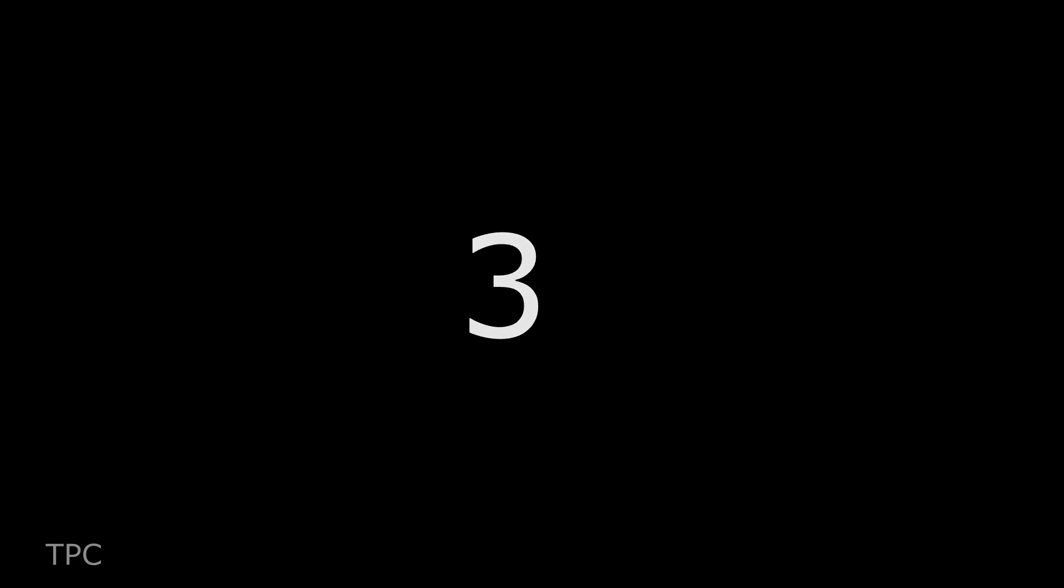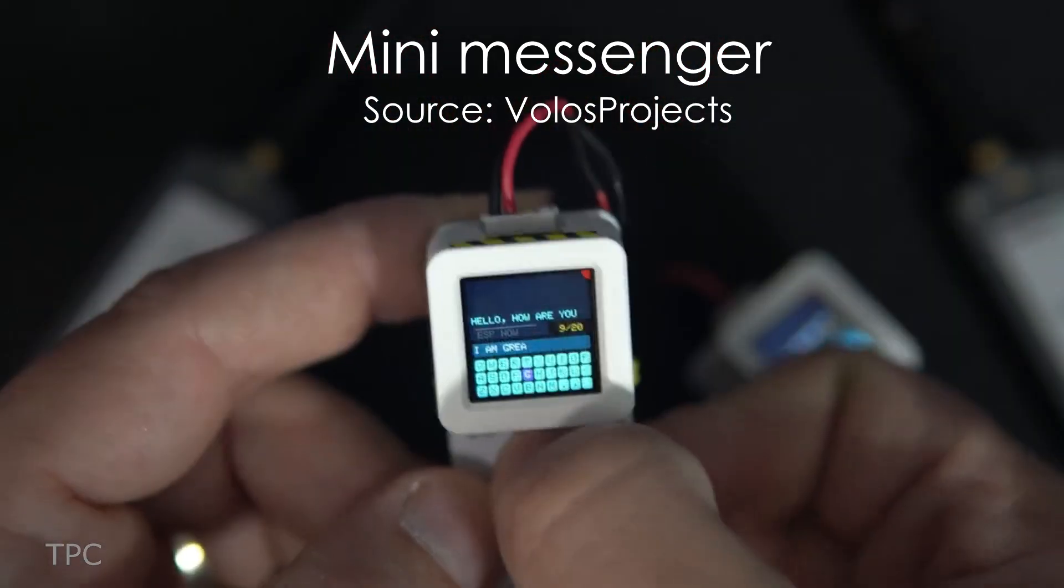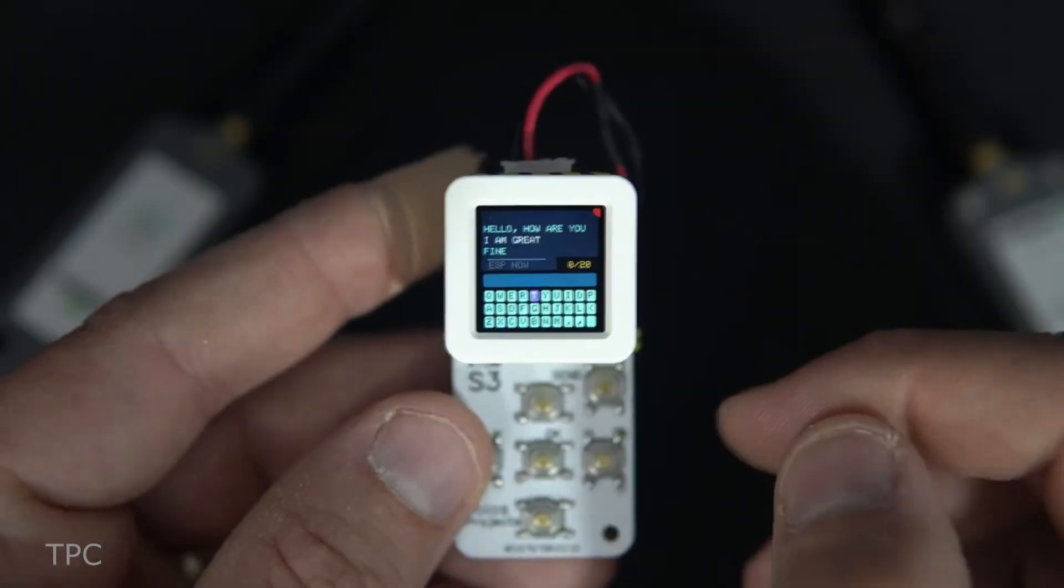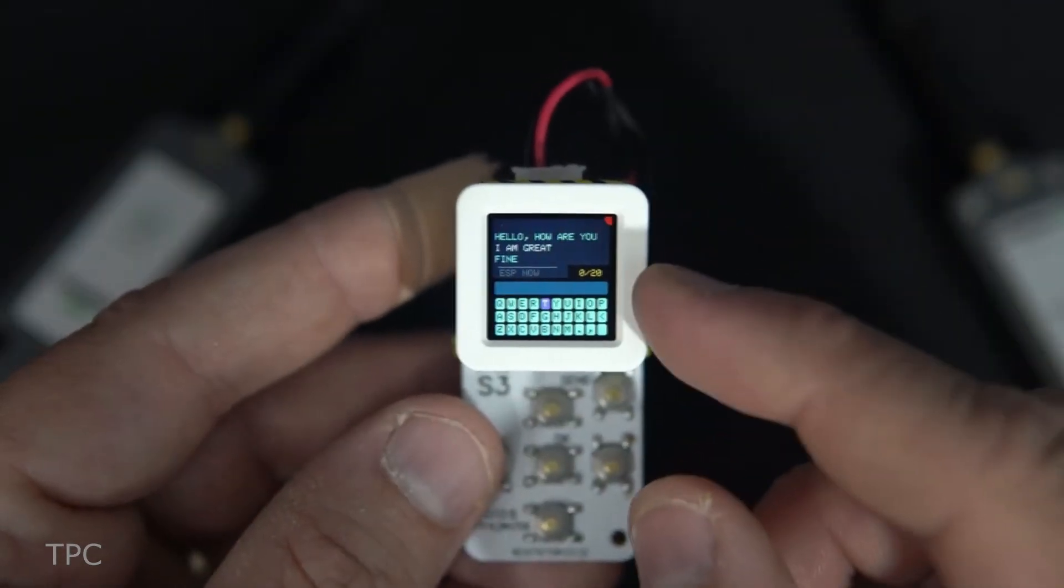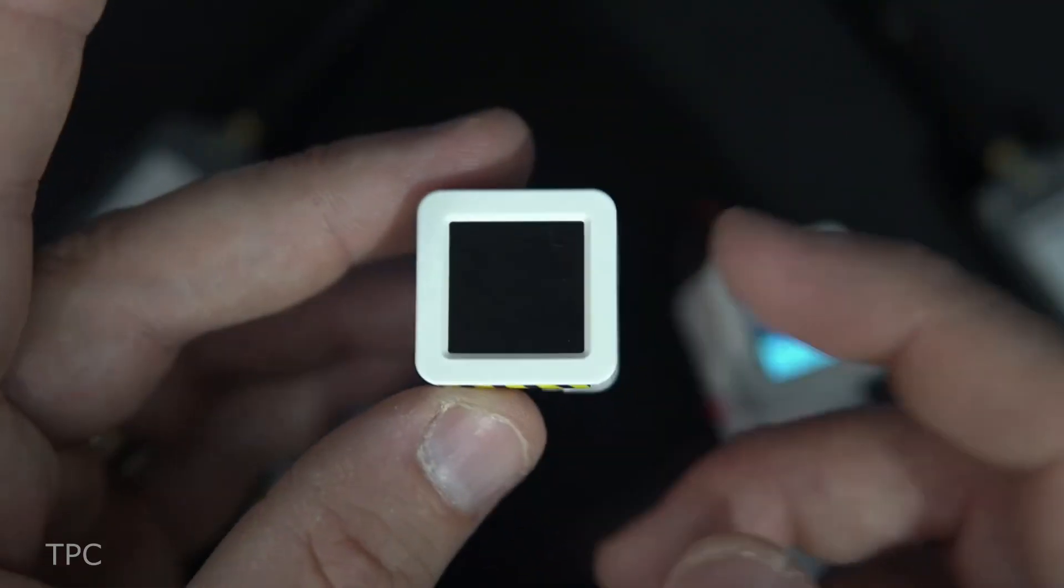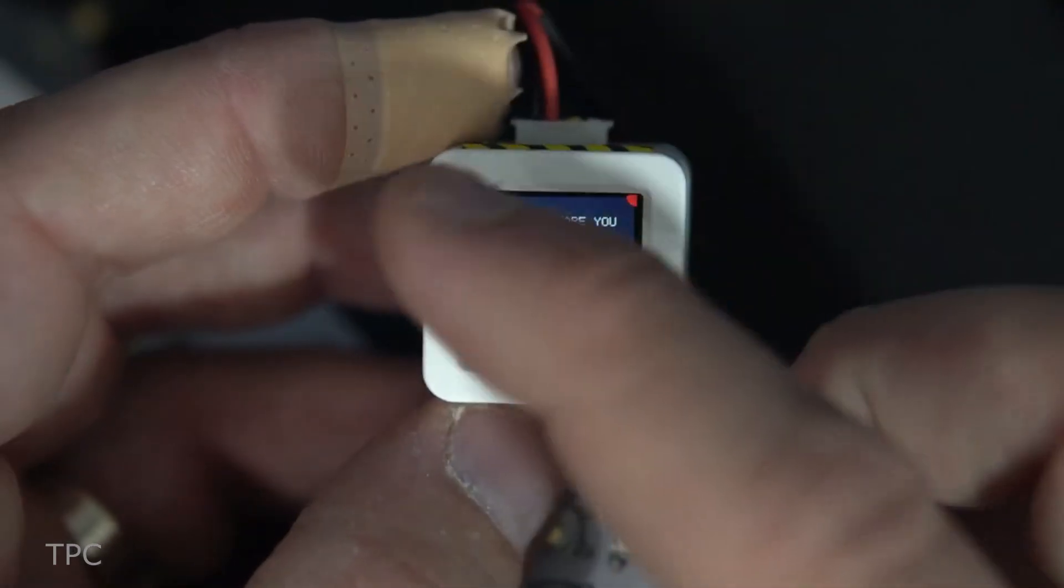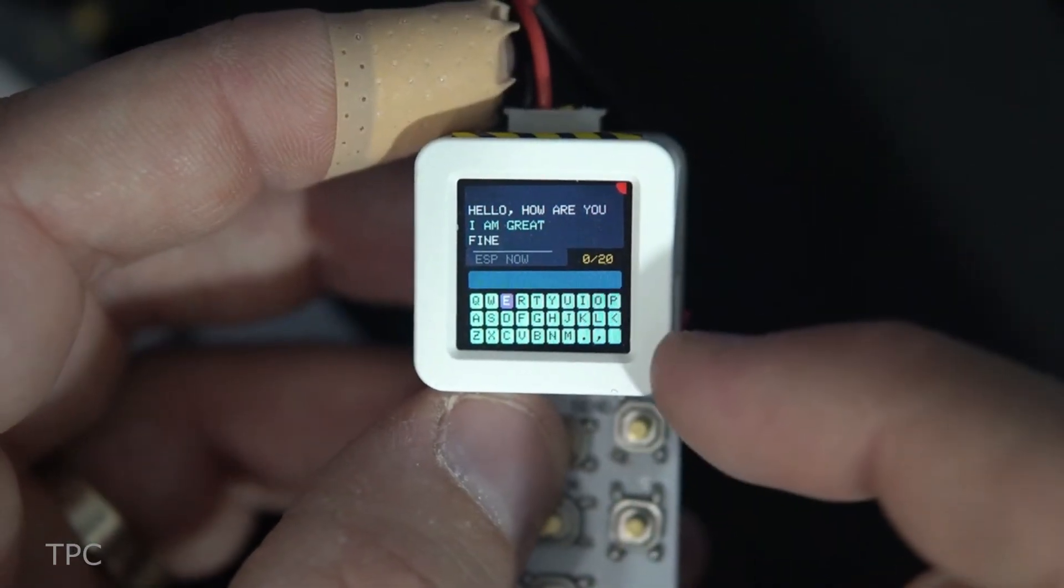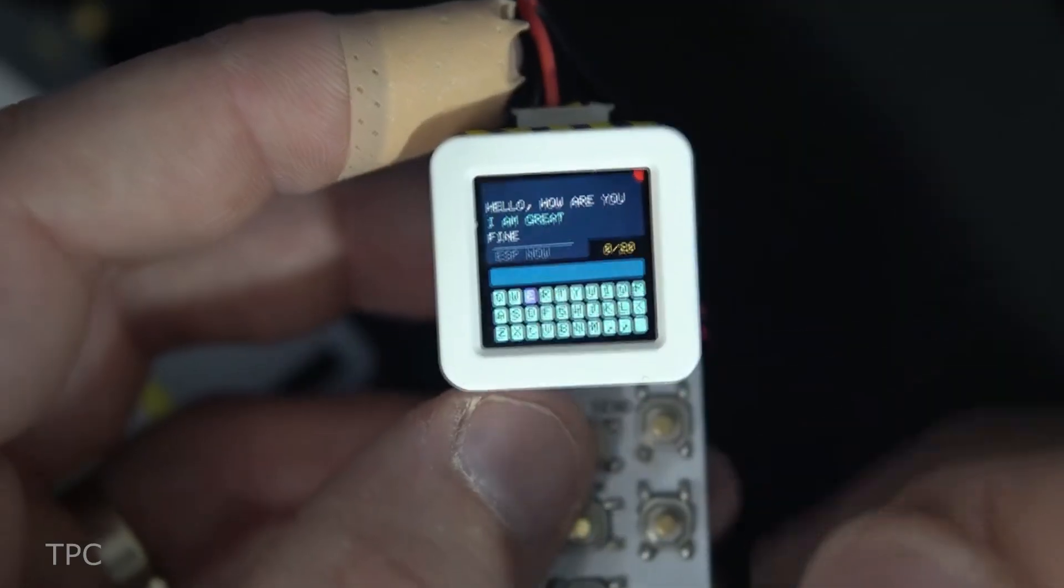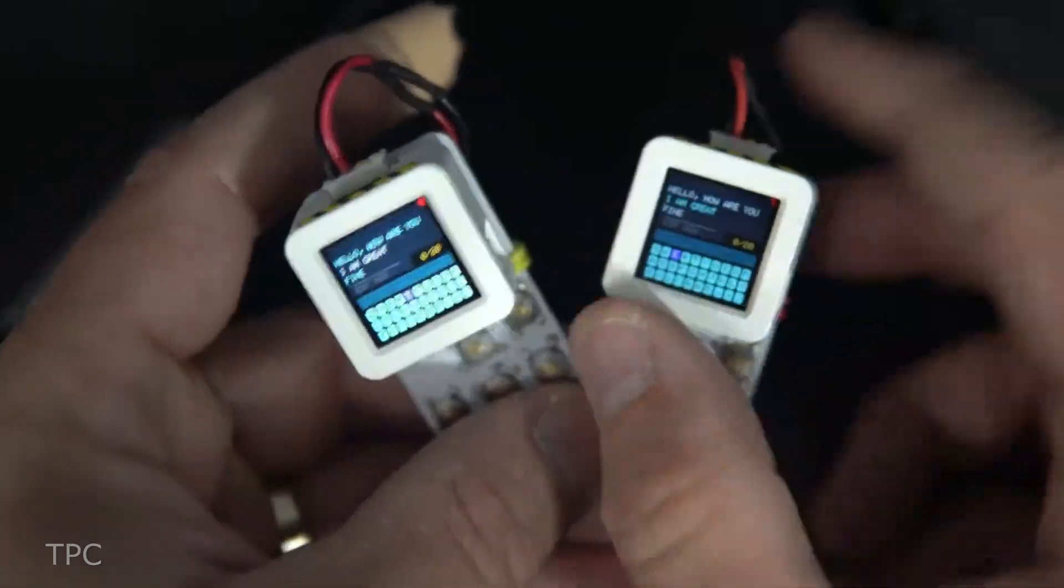Number 3. Volos created a miniature messaging device that sends short messages using two-way ESP Now communication. Despite its simple appearance, which consists of a custom PCB, some tactile switches, and an M5 stack Atom S3 development board, it works effectively. It's important to note that the device is only suitable for short-range communication, and each message can be up to 20 characters long. However, it's a great way to communicate with your friends.